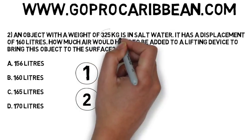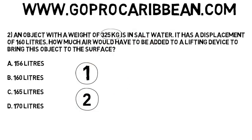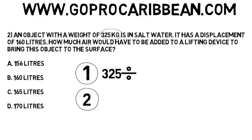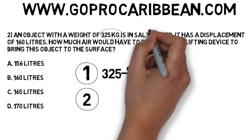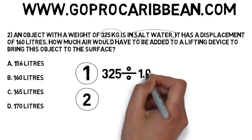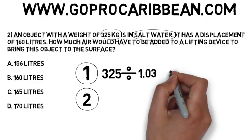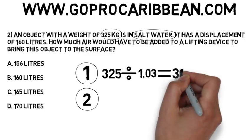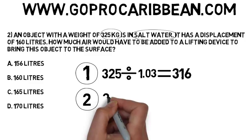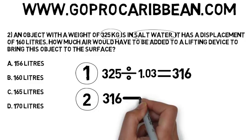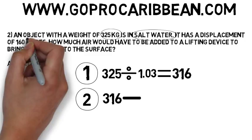We now need to work out the amount of water we need to displace in total to make it neutrally buoyant. We do that by dividing by the type of water it is in. What type of water is it in? It's in salt water. The salt water constant is 1.03, and that gives us our first calculation — the total amount of water in liters that we need to displace, which is 316 liters.